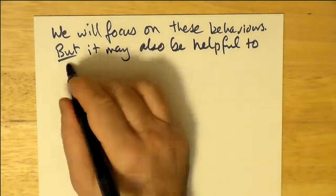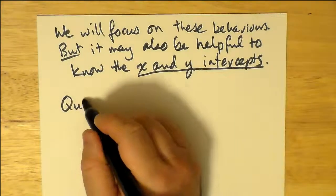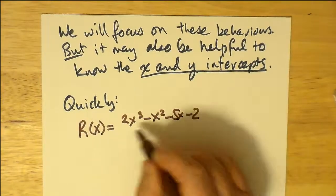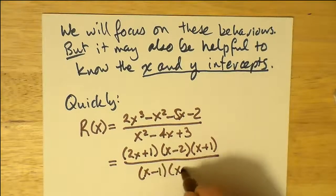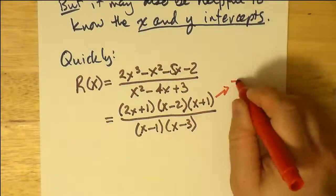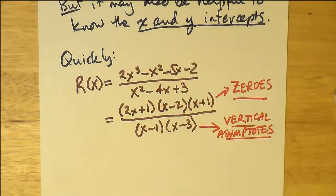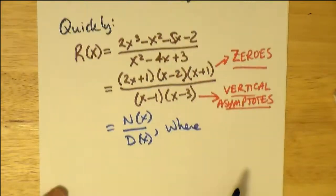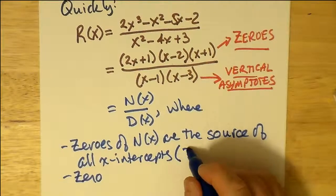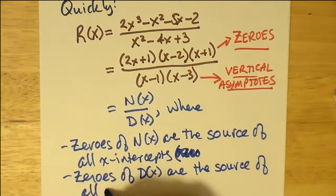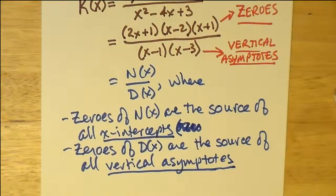It might be helpful to know the x and the y-intercepts as well. Now we've already just factored the numerator and the denominator. So factoring the numerator, we discovered that there's actually three x-intercepts, and here are the factors: 2x plus 1 times x minus 2 times x plus 1. On the bottom, we have the vertical asymptotes. So that's pretty much the going rate here: the numerator is always your zeros, the denominator will always be your vertical asymptotes once you factor the polynomials accordingly. Zeros of N of x are the source of all x-intercepts. Zeros of D of x, the denominator, are the source of all vertical asymptotes. And this is true for all rational functions.